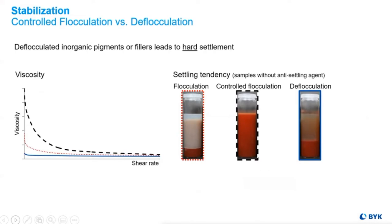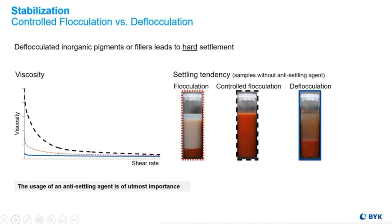Flocculated pigments have a soft settling tendency, depending upon the pigment size and coating medium. Comparing apples to apples, we see that the same pigments in the same system using a controlled flocculation additive provides less settling. Complete deflocculation has a negative side effect of hard pack settling, since each particle is now independent in the system and is stabilized to remain separate.